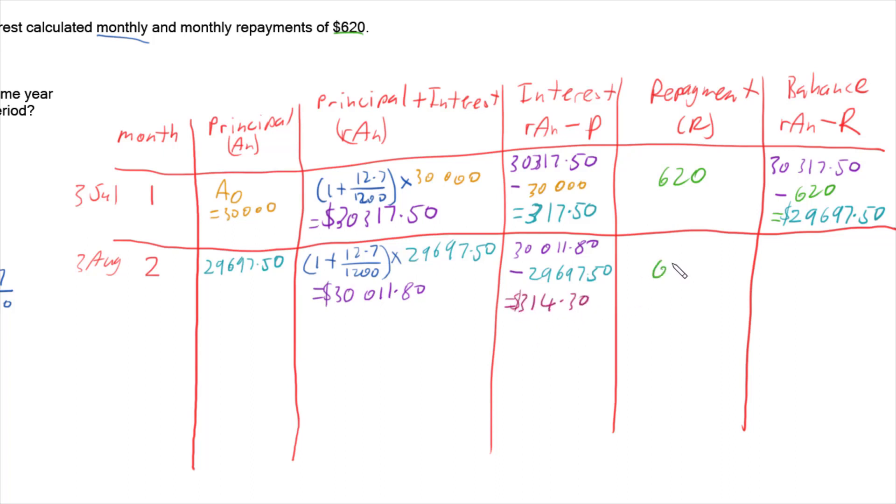We then make a repayment of 620. So we have $30,011.80 minus 620. And that means at the end of this period, this month, the 3rd of August, we still have $29,391.80 remaining.